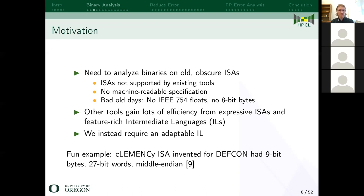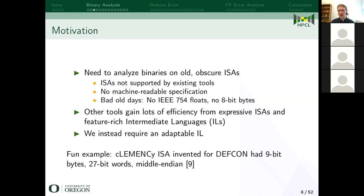A fun example is one from DEF CON — it was invented for a challenge and had nine-bit bytes, 27-bit words, and was middle-endian. If you know much about ISAs that sounds silly, but it's actually more realistic than you might think. There are some architectural reasons why you might have strange byte ordering.